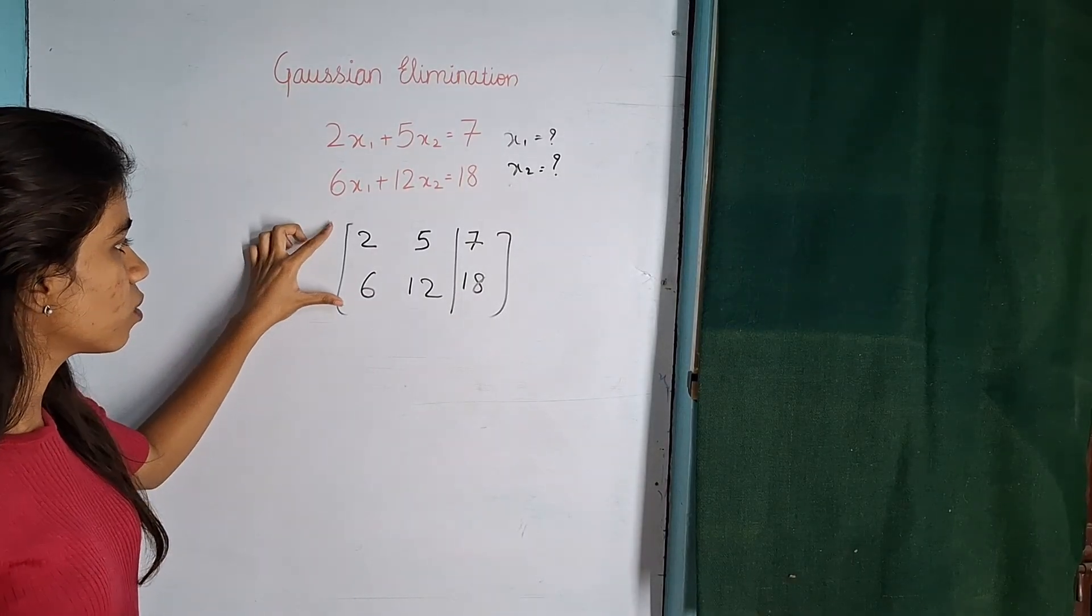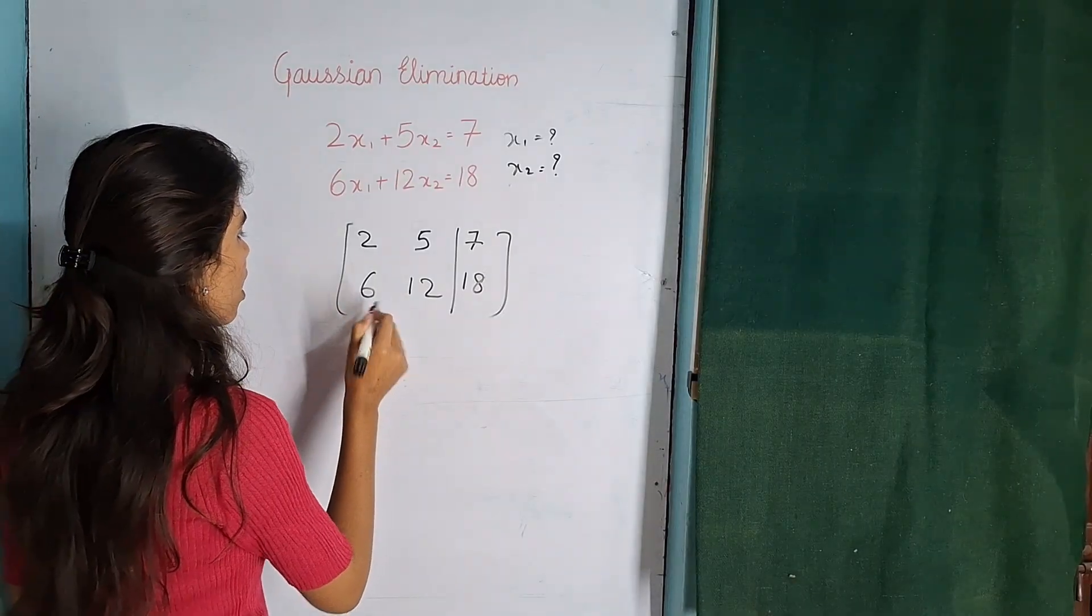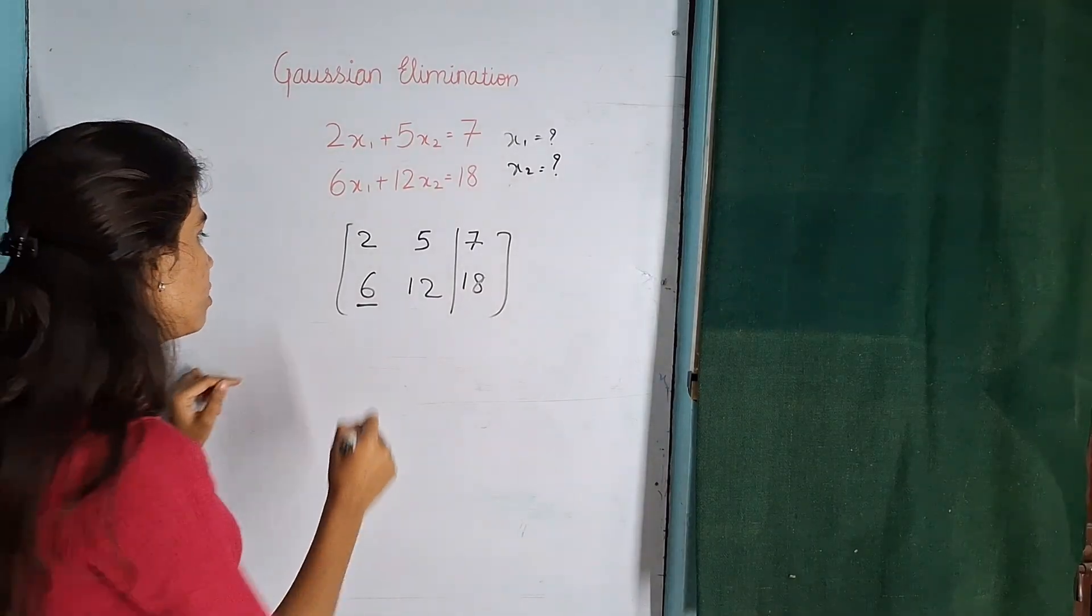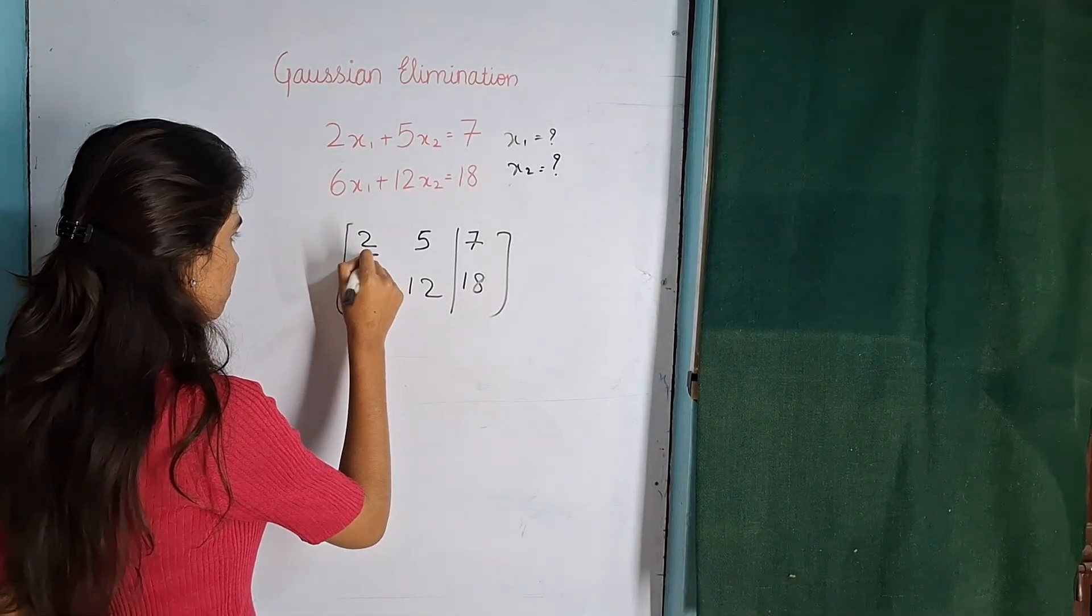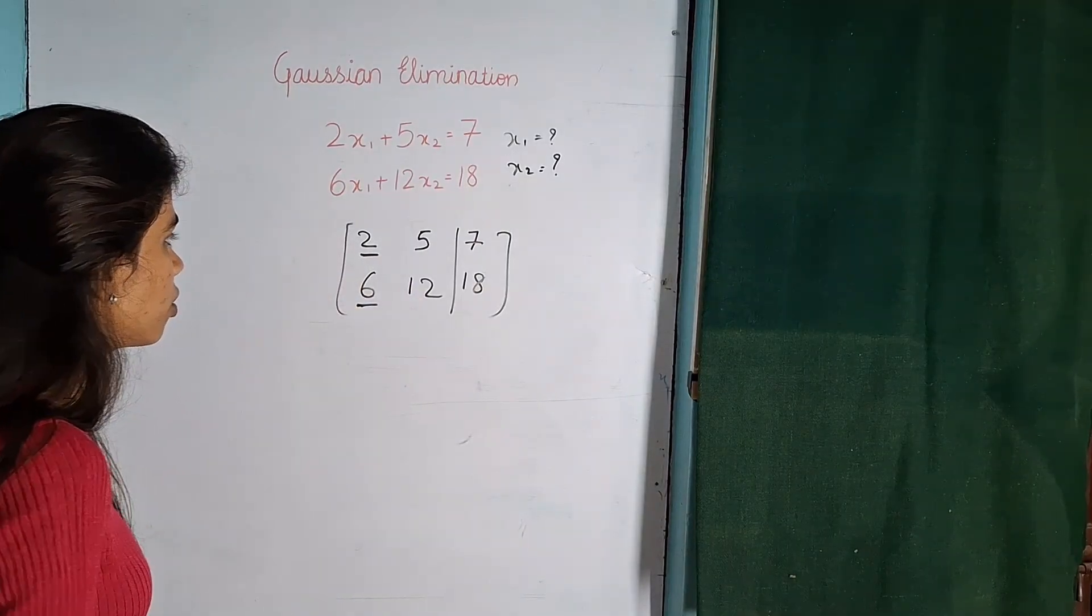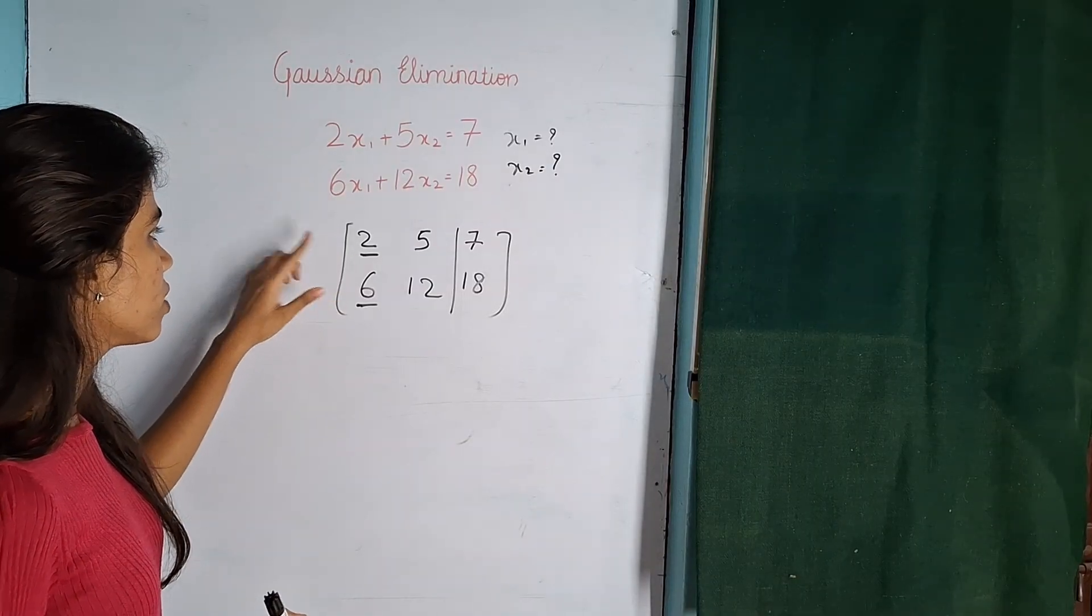Now if only 2 by 2 matrix is there, this is 2 by 2 matrix, then what I am going to do, your aim is only to make this 0. So your aim is only to make this 0 and this 1. This has to be 1, this has to be 0. In this problem, first we will make 2 as 1. So how we will make 2 as 1?